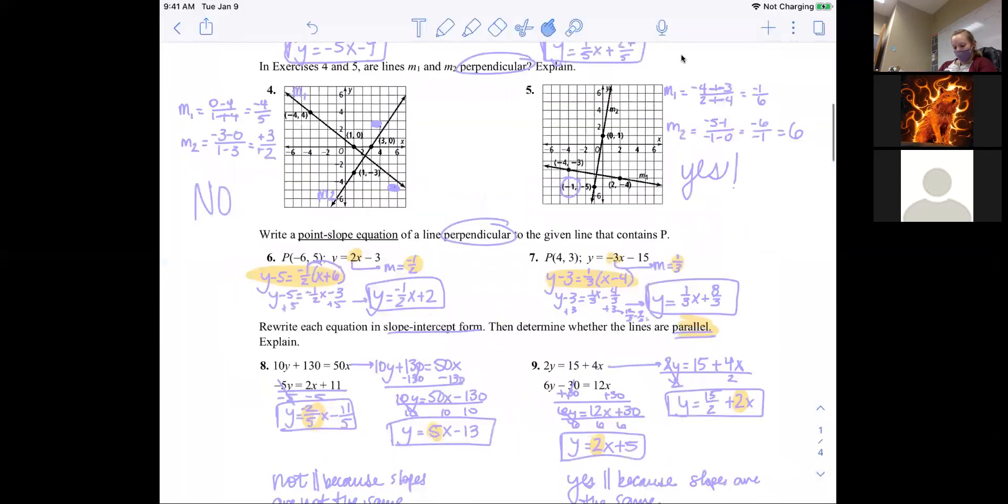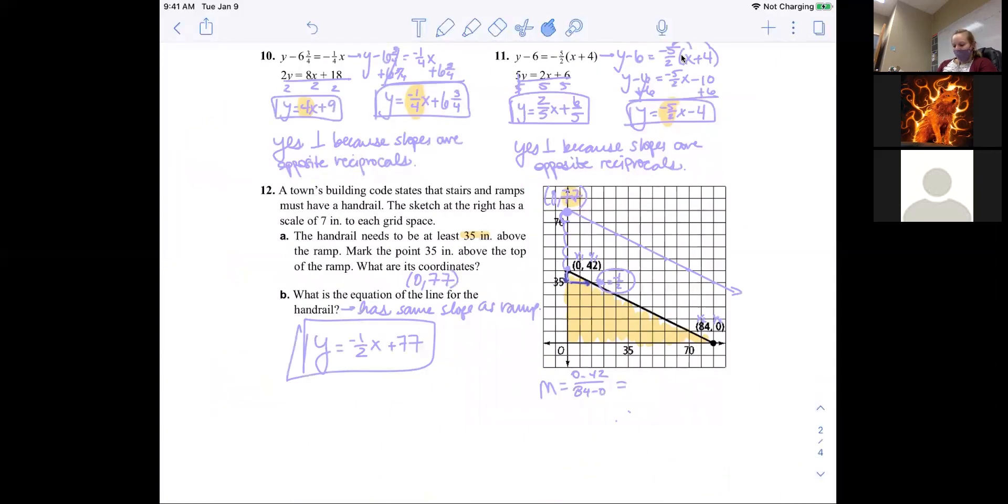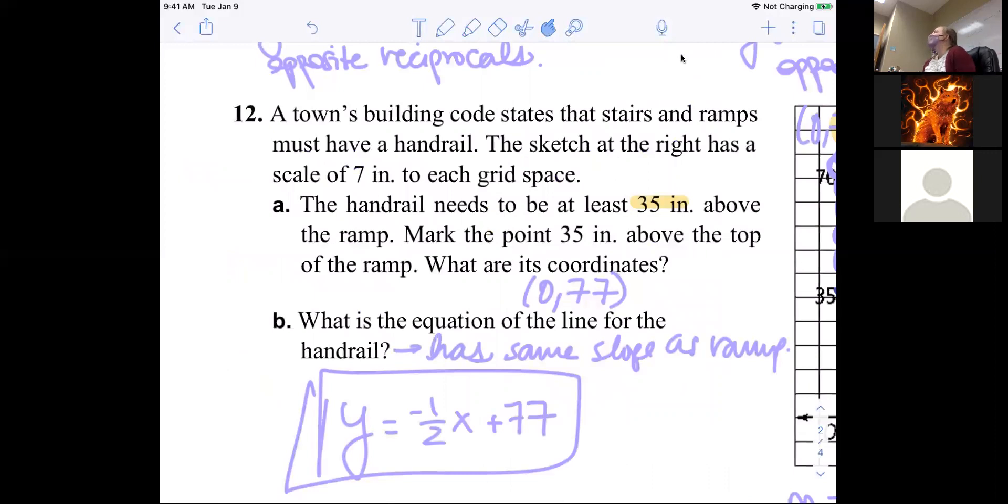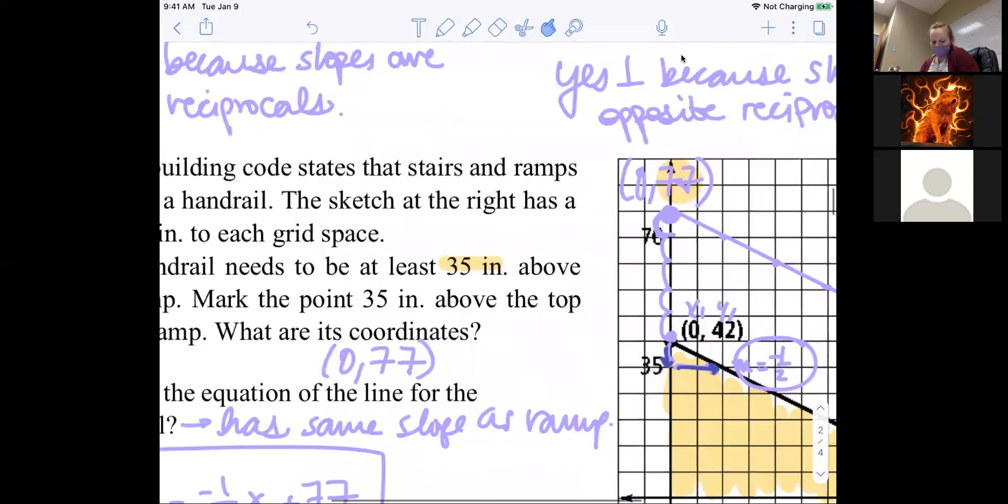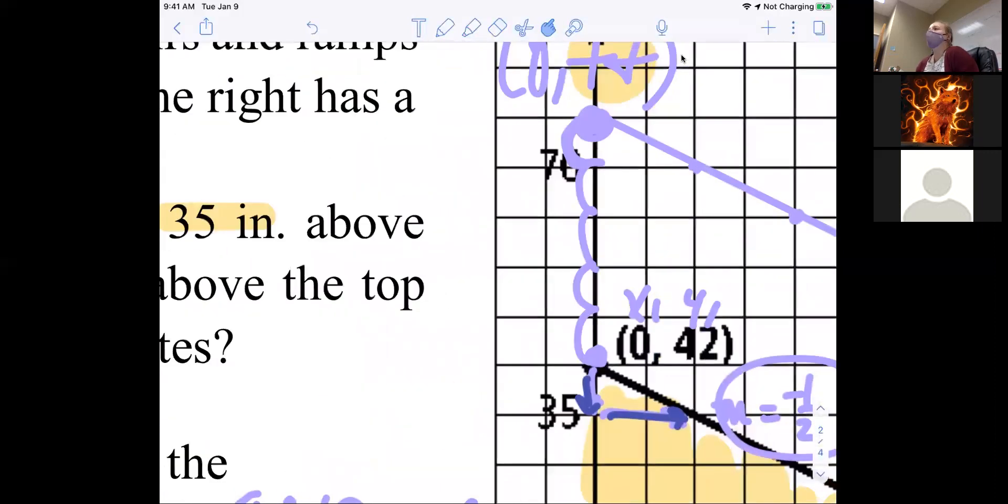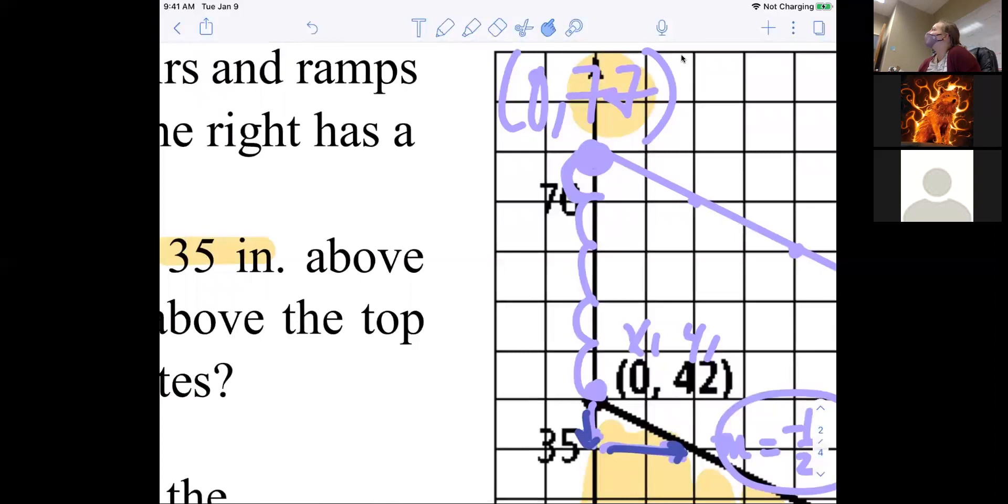Is there anything on 3.8 you want to talk about? Tamara? Number 12. That's a great one to talk about. Number 12 is a word problem about stairs and ramps. If you go to the ramps by the science wing, you know that the handrail is the same slope as the actual ramp. Because if you're holding your hand on the ramp, it should be at the same height the whole way. The handrail always has to be the same distance from the floor. So that means that their slopes are parallel. So it says that we're putting a handrail on this ramp and it must be 35 inches above the ramp. So I'm going to go over to my graph. The one thing to note is that each grid is seven units. So in order to go 35 units up, I'm only going up five boxes because each box is seven.